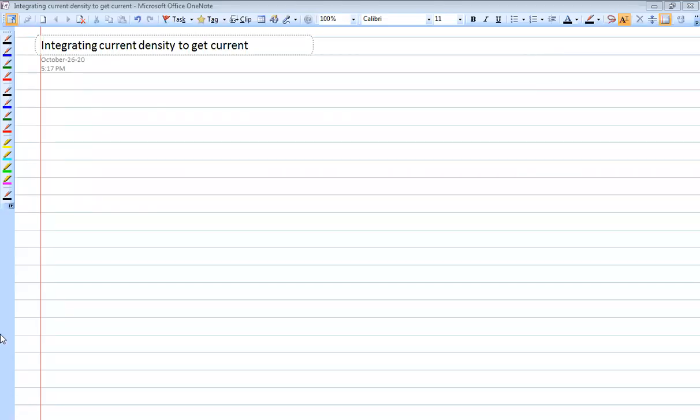This is an example of showing you how to do an integral to get the total current when you have current density. So the definition of current density is J is equal to the current per cross-sectional area.